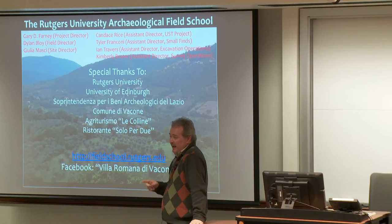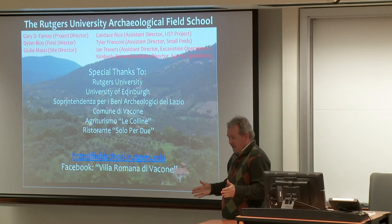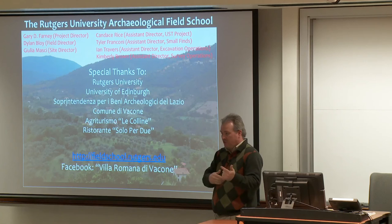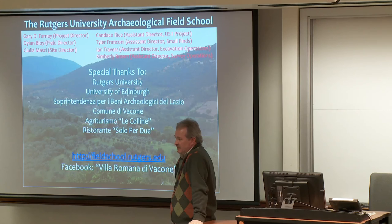As for where workers would live, some people have suggested the cryptoporticus is where they stayed — because sometimes they have storage in them but there's a lot of space that's not obviously accounted for. They're kind of perfect places to keep people you want to keep an eye on, being deep with controlled entrances, and in our case they have those passages that go to different parts of the villa — so there could be movement without being seen by the fancy people who live there. Archaeologically, it's really hard to identify who the labor actually was.